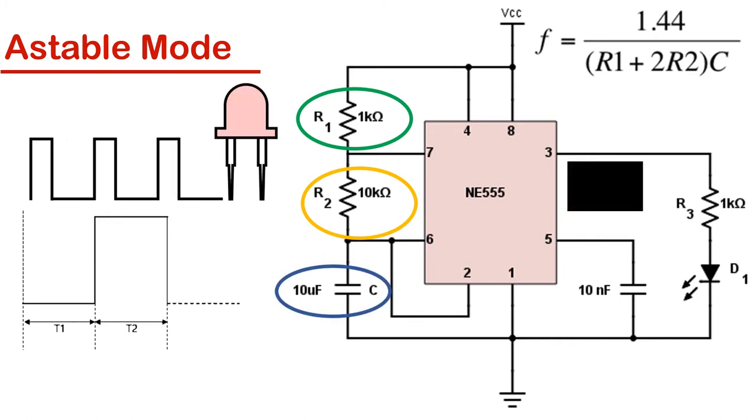Astable mode works as an oscillator circuit, in which output oscillates at a particular frequency and generates pulses in rectangular form.